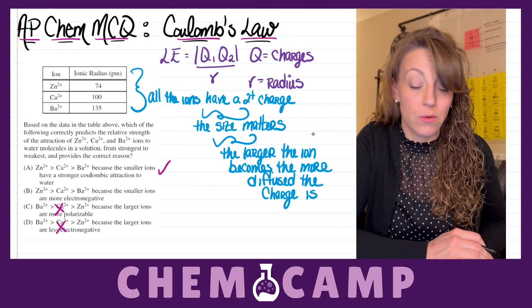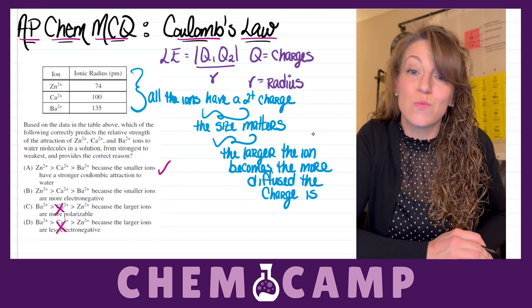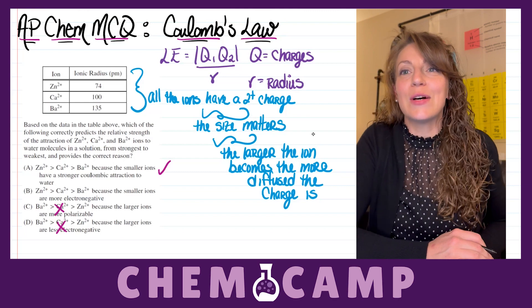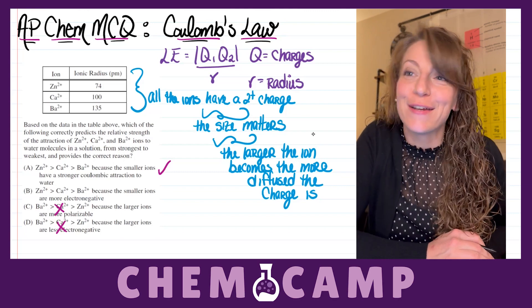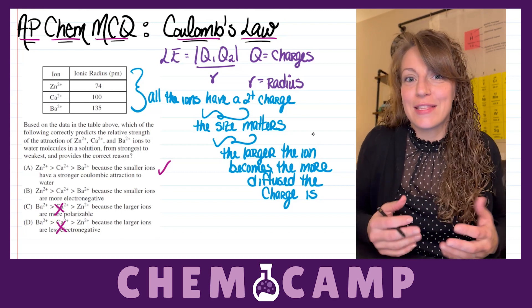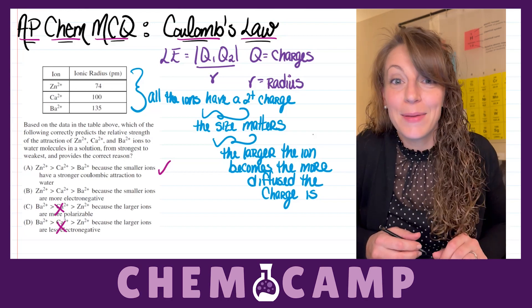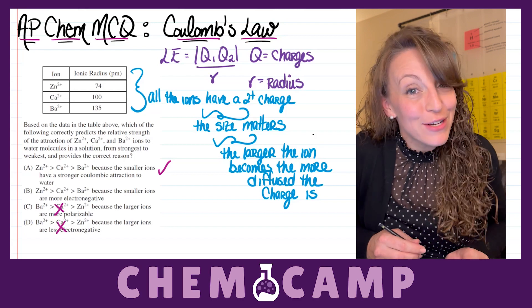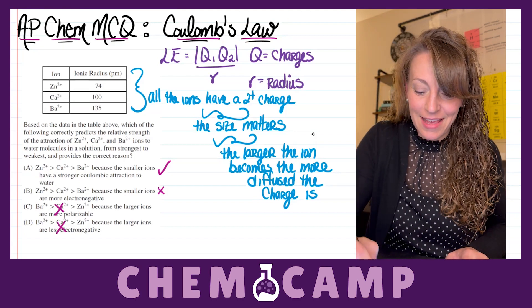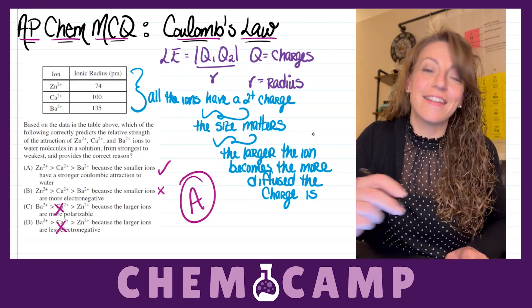Letter B tells you that ordering because the smaller ions are more electronegative. Well, that's kind of like the gotcha answer here. They want you to feel so comfortable with that term electronegative versus the Coulombic attractions that you automatically pick B. Don't let them trick you, though. The answer here is letter A.